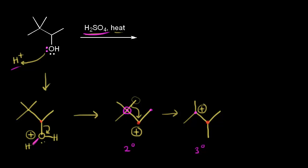Since this is an E1 mechanism, a weak base comes along and takes a proton. We could take a proton from one adjacent carbon. Our base takes that proton, so those electrons move in to form our double bond and get rid of the formal charge, producing an alkene as our first product. The electrons in that C–H bond moved in to form the alkene.